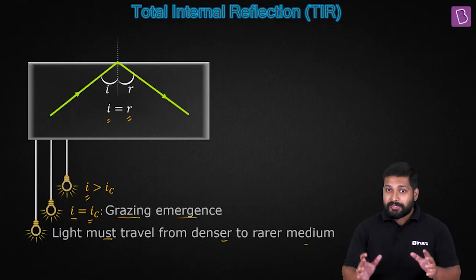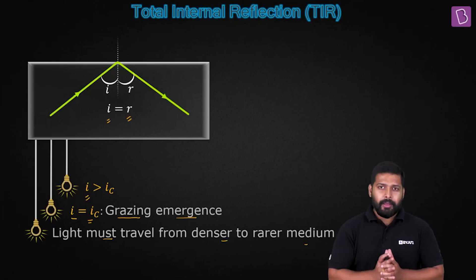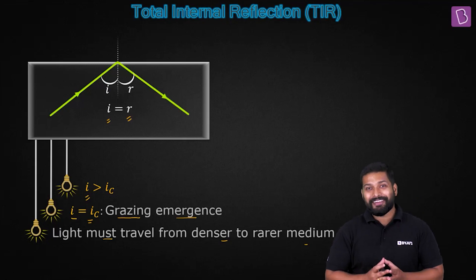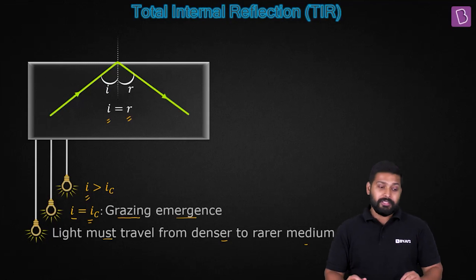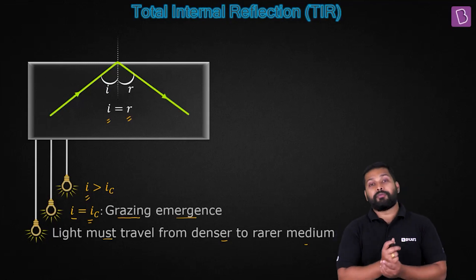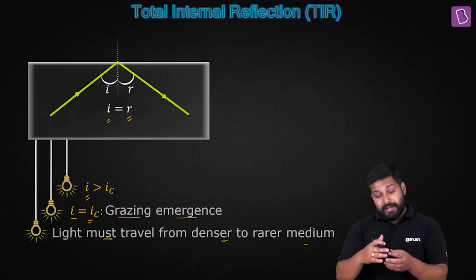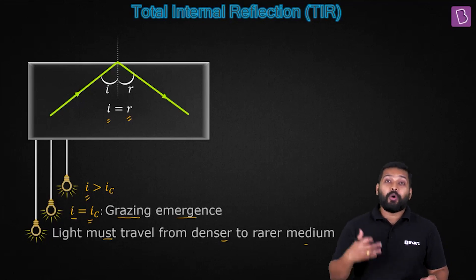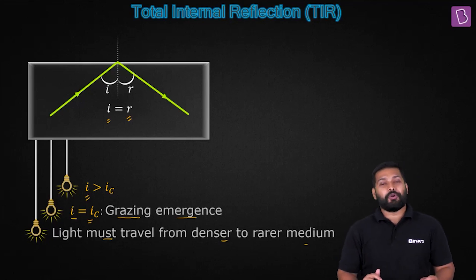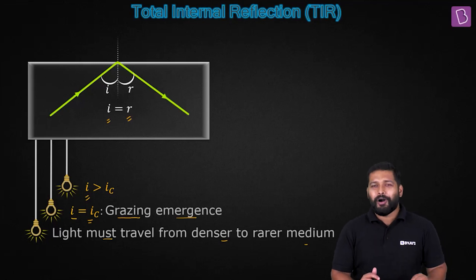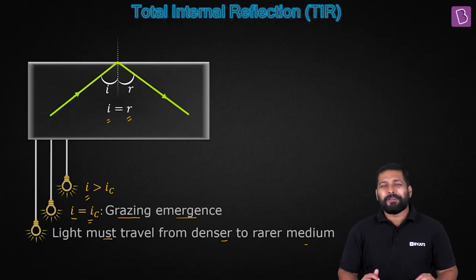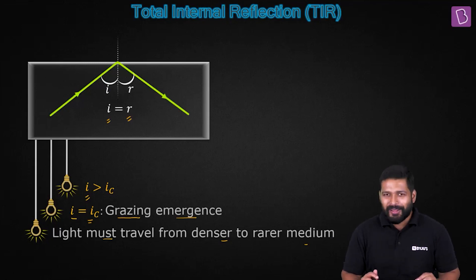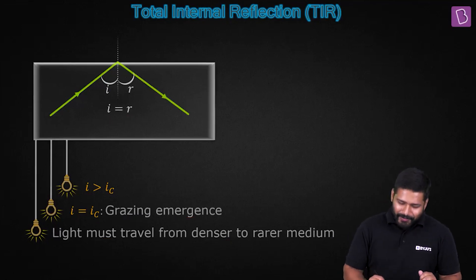It's not just about understanding — we must get things mathematically right. How do we calculate the value of the critical angle? I understand that as you increase the angle of incidence the light reflects back, but how do I find this value? All those calculations and formulas are what we are going to go through now.